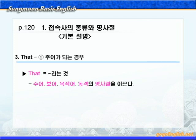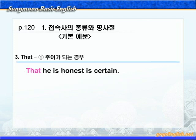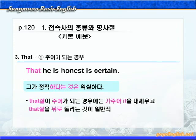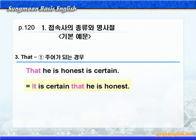다음은 3번 명사절을 유도하는 종속접속사 that을 공부해 보겠습니다. 접속사 that은 '~라는 것' 이런 의미로 주어, 목적어 혹은 보어 혹은 동격의 명사절을 이끕니다. 먼저 1번 that절이 주어가 되는 경우를 보죠. 'That he is honest is certain.' 그가 정직하다는 것은 확실하다. 종속접속사 that은 주어가 되는 명사절을 유도하고 있습니다. 이런 경우 주어가 너무 기니까 대개 가주어 it을 내세우고 that절을 뒤로 돌리는 것이 일반적입니다. 'It is certain that he is honest.' 이 문장 구조 앞에서 여러 번 나왔어요.